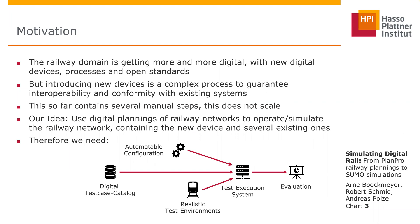Our idea is to solve and automate this problem — to actually operate a planned or existing railway station. We take a planning of a railway station and say: this signal comes from manufacturer A, this point comes from manufacturer B, and this axle counter is from another. Then we operate this planning — we simulate it, run trains through the network, and look at how devices are communicating: is everything working, is the signal showing the correct signs, and so on. This is our idea for automating interoperability and conformity tests.